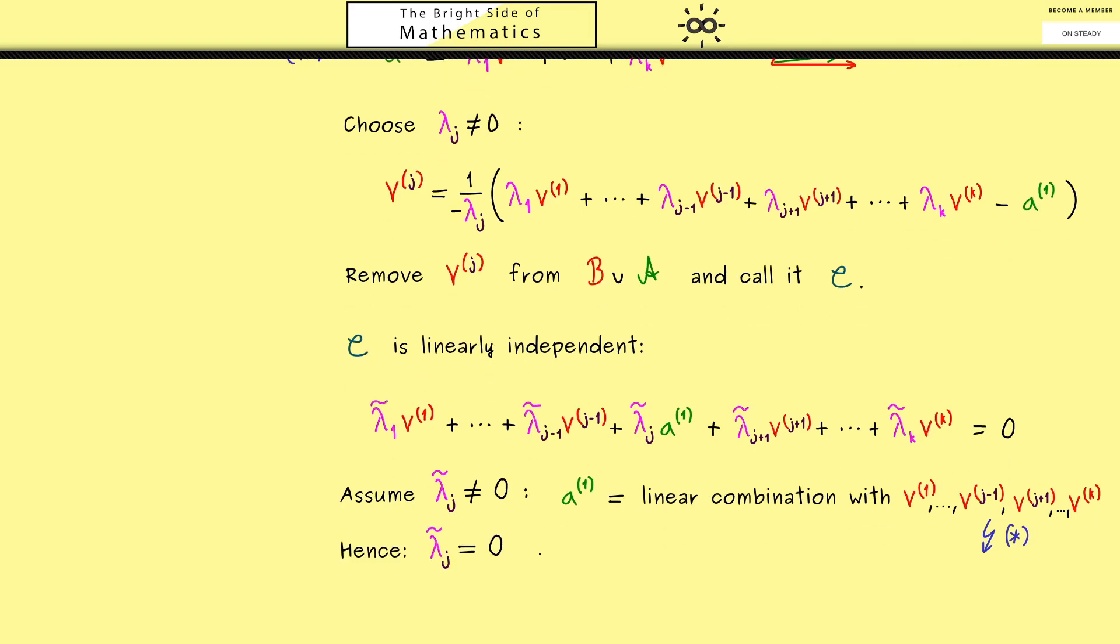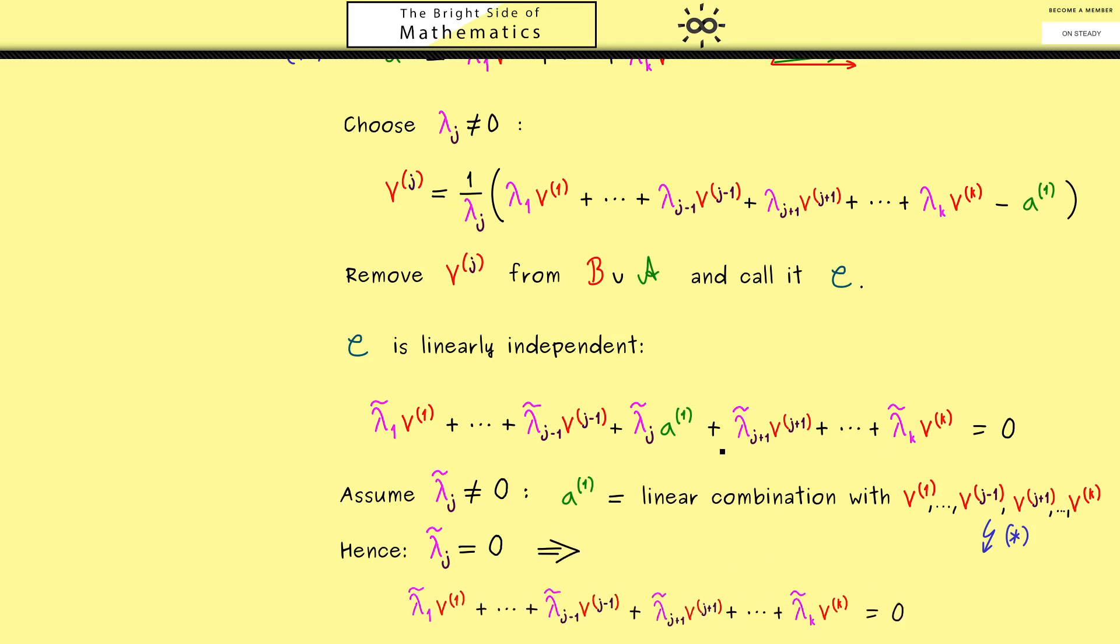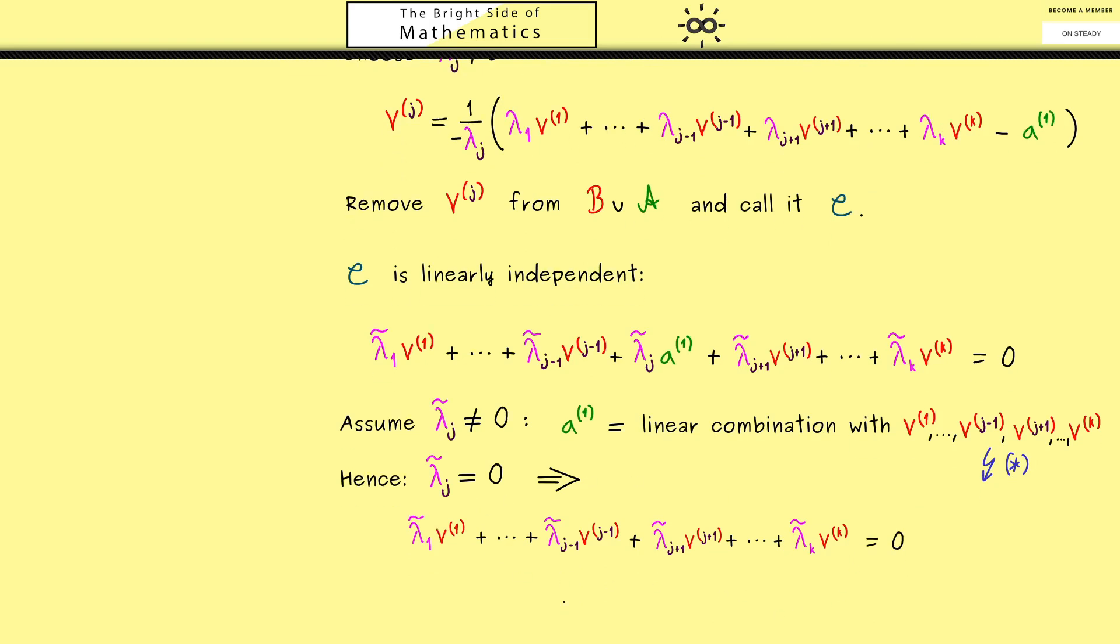Moreover, this then implies that the linear combination from above is much simpler. So you see, now only the v vectors are involved here. However, for them, we already know that they are linearly independent. So in conclusion, we have that all the coefficients have to be 0. And in summary, this means that our set C is also linearly independent.